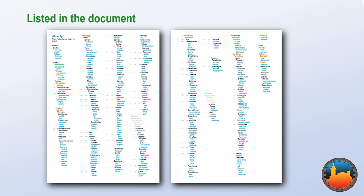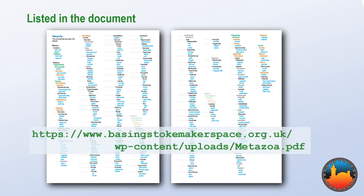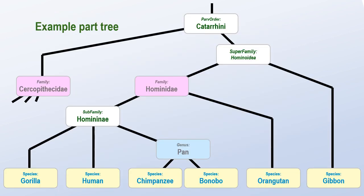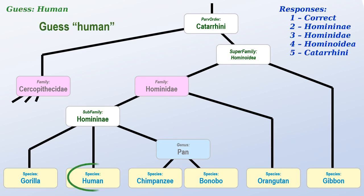The complete list is in this document and can be downloaded from this location. If we know all these groupings, how does that help us to play the game? Let's look again at the tree of apes. If we are playing with just these nodes, we could perhaps guess that the species is human. There are only five ways the game could respond.